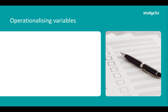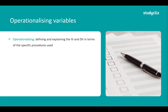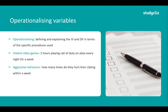How do we operationalize variables? To operationalize, we just have to define and explain the independent and dependent variables in terms of the specific procedure used. Going back to our previous experiment, our independent variable was violent video games. To operationalize this, we'd say the independent variable is violent video games, implemented by making a child play two hours of Call of Duty on Xbox every night for a week. Our dependent variable is aggressive behaviour, measured by how many times the child hurts their sibling within a week.